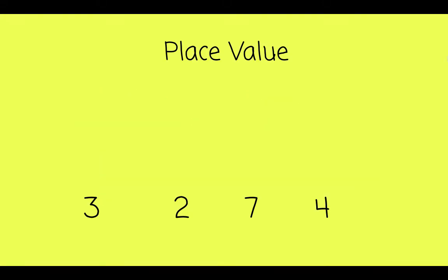But first let's review place value. 3,274. That 4 is in the 1s column, which is the furthest to the right. Then we have the 10s column.